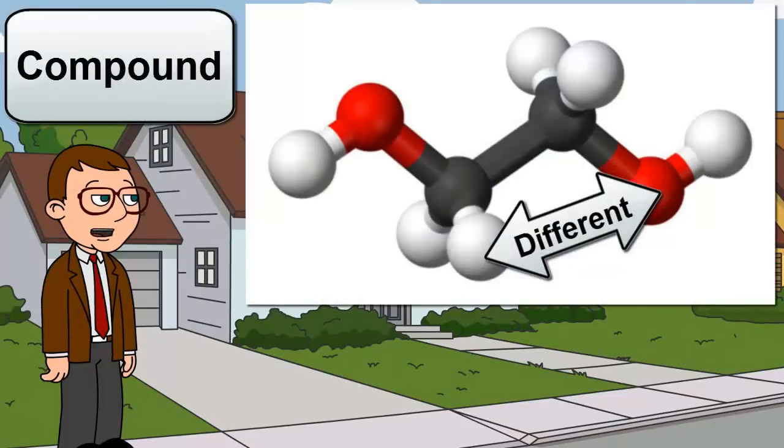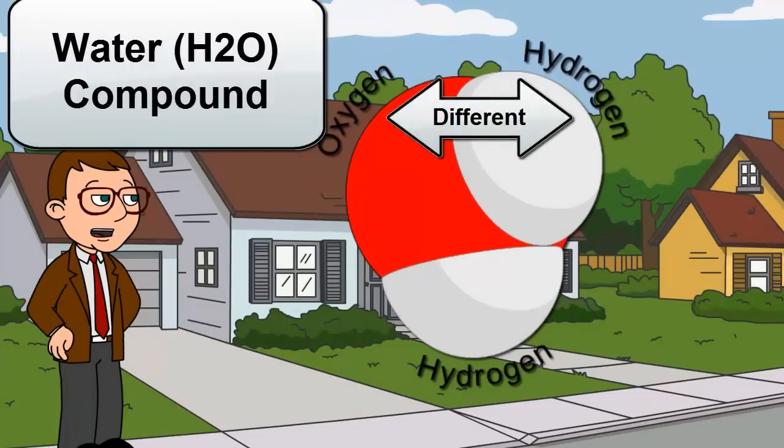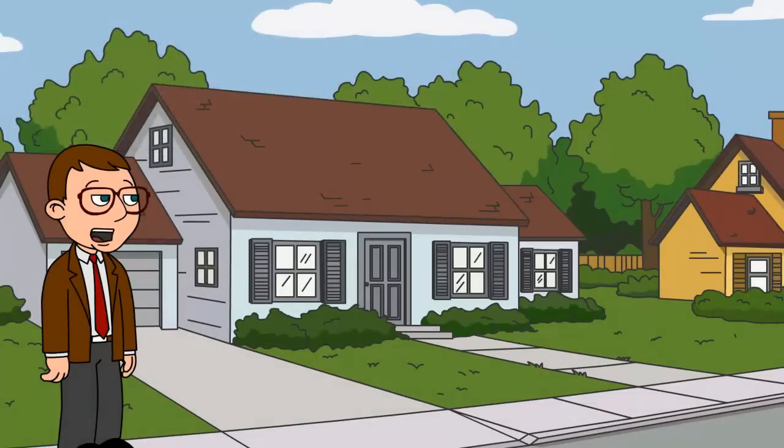A compound is made of two or more different atoms joined together. Water is a compound because it is made of two hydrogen and one oxygen atom. Now let's move off the subject of chemically bonded substances.